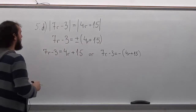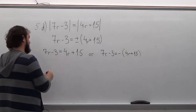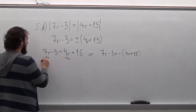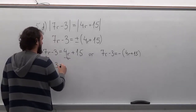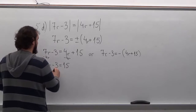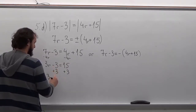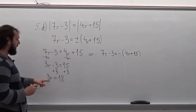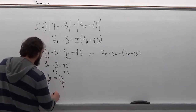For this one, the first thing we want to do is subtract 4R from each side. So 7R minus 4R is going to be 3R minus 3 equals 15. Now we want to add 3 to each side. We'll have 3R minus 3 plus 3 is 0, so 15 plus 3 is 18. And now we will divide both sides by 3, so R is going to be equal to 6.